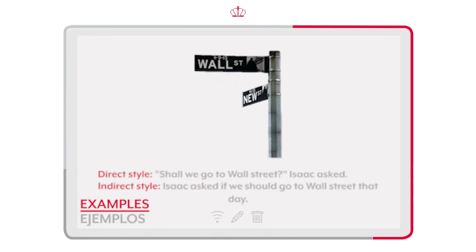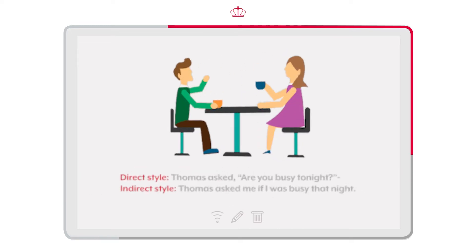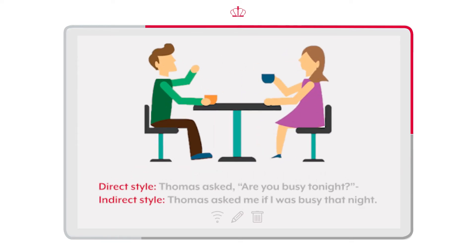Examples. 'Shall we go to Wall Street?' Isaac asked. Isaac asked if we should go to Wall Street that day. Thomas asked, 'Are you busy tonight?' Thomas asked me if I was busy that night.